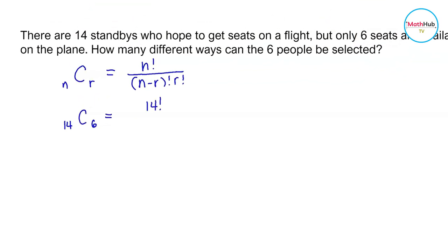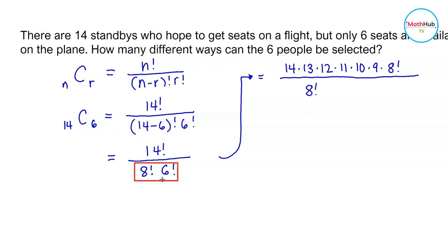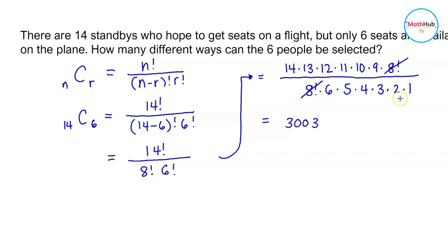This is equal to 14 factorial divided by 14 minus 6 factorial times 6 factorial. Since 14 minus 6 is equal to 8, the numerator is rewritten as 14 times 13 times 12 times 11 times 10 times 9 times 8 factorial. The denominator is 8 factorial times 6 factorial, written as 6 times 5 times 4 times 3 times 2 times 1. Cancel out 8 factorial, then multiply the remaining numerator and divide by the denominator. You can use your calculator to compute this, and you will get 3,003. There are 3,003 ways to do this.